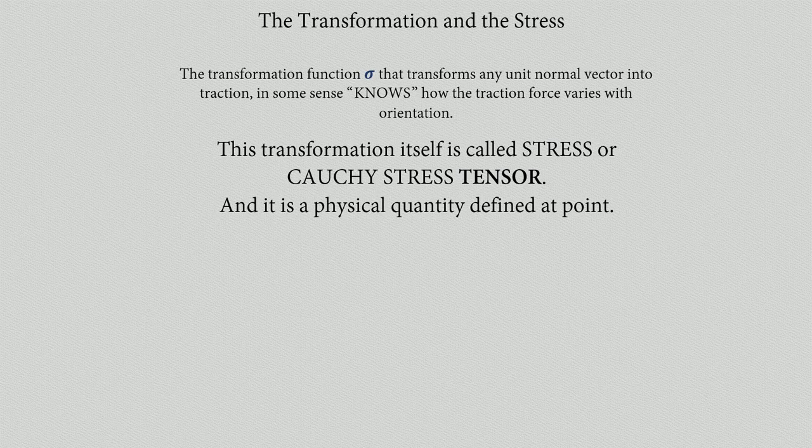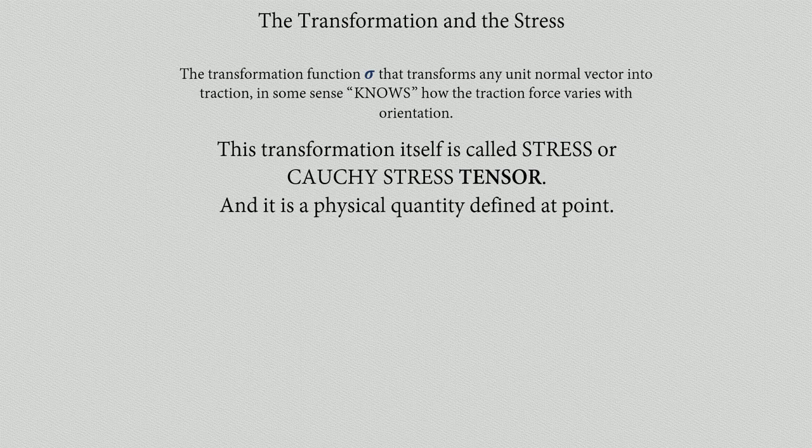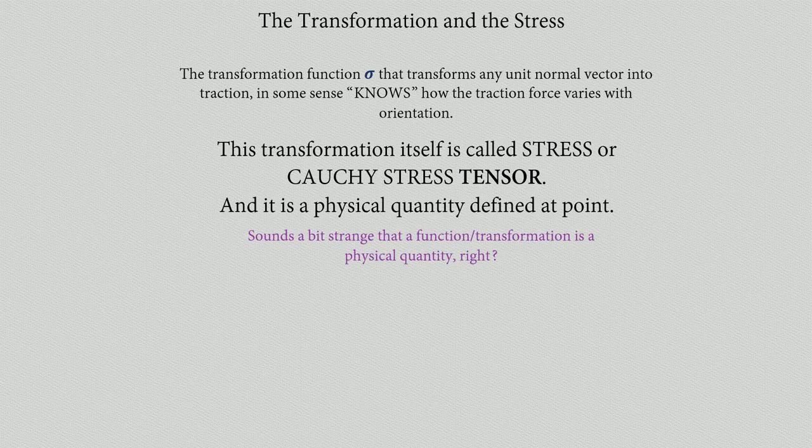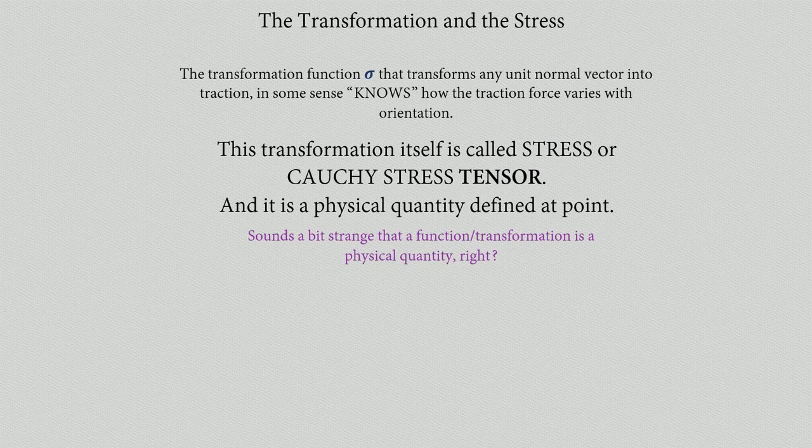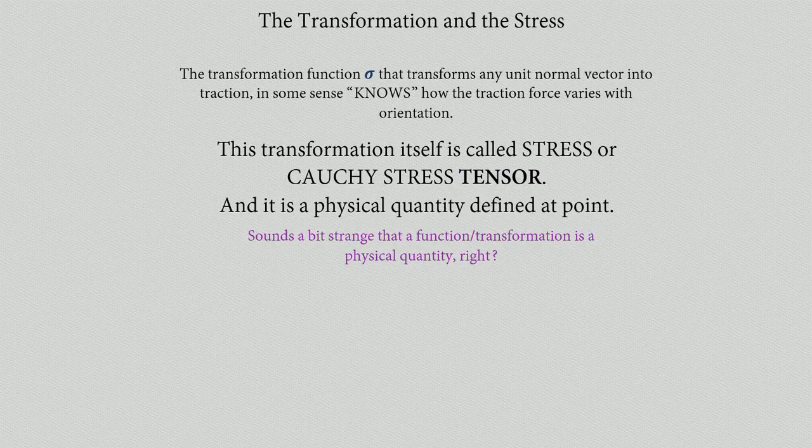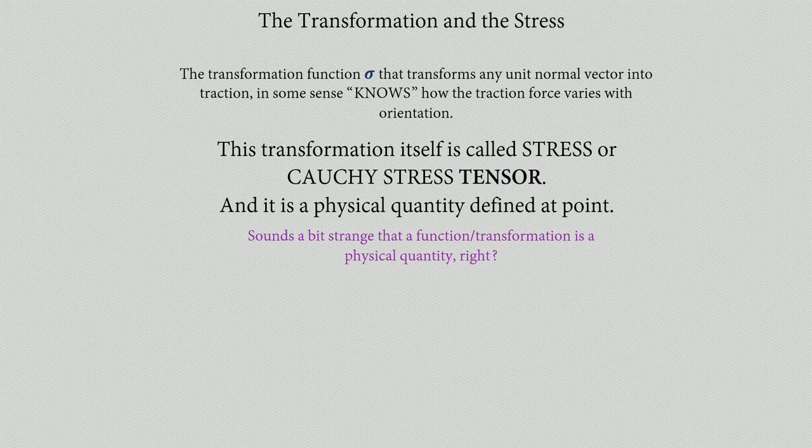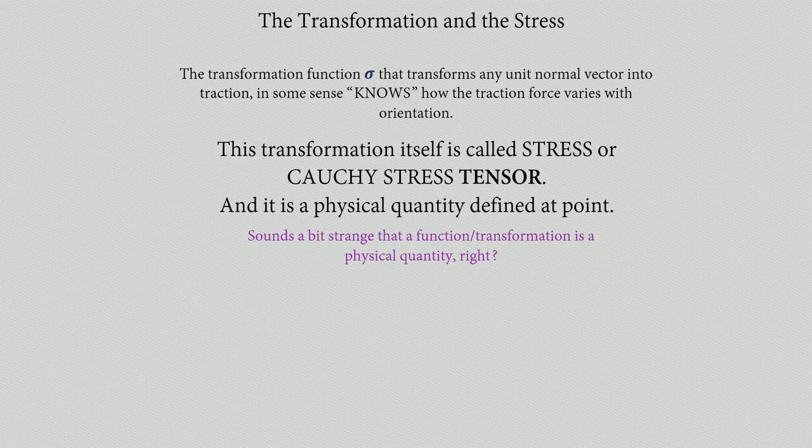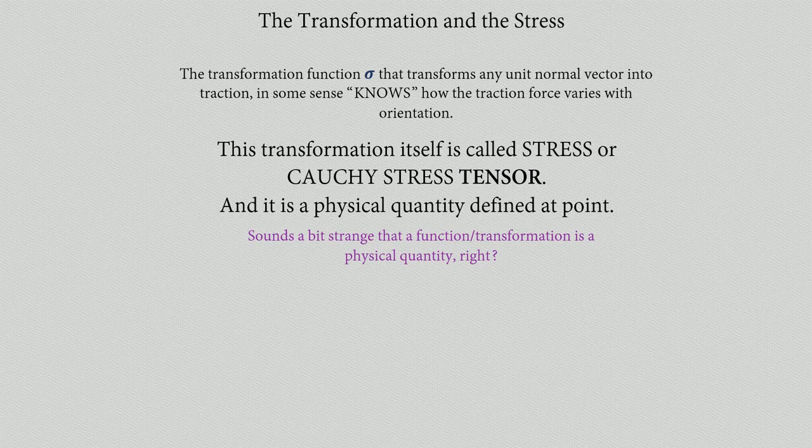It gives you the traction vector in any direction that you want. So it's a bit strange that a function or transformer that we call sigma is actually a physical quantity, right? But this is the fact: this transformer is actually a physical property. I'll explain when we discuss tensors—there are some other properties that you are familiar with that are also a transformer and a physical property.